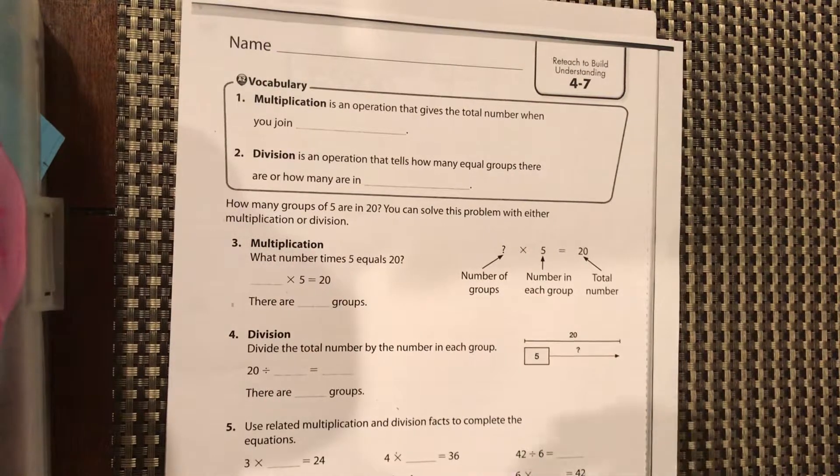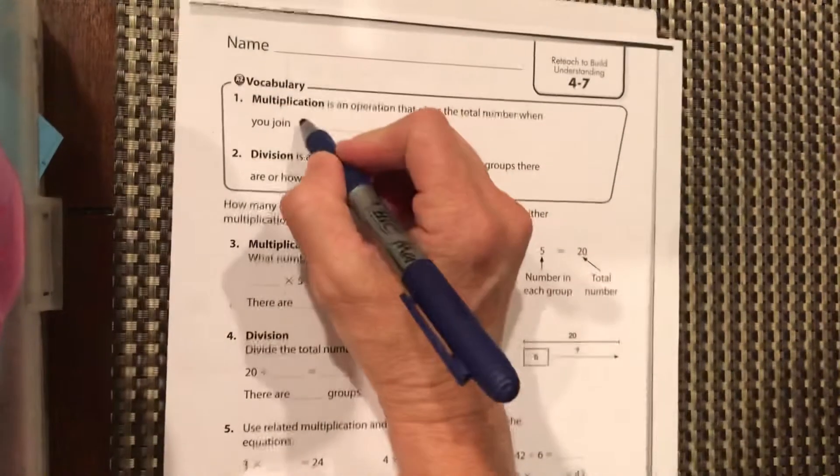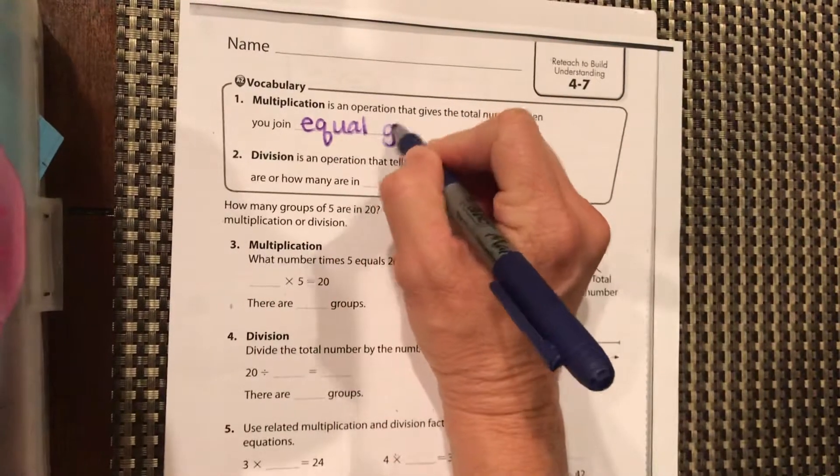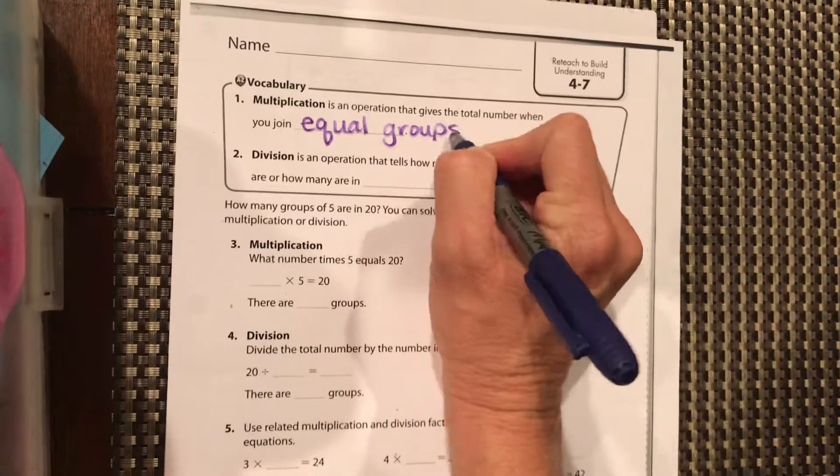Multiplication is an operation that gives a total number when you join equal groups.